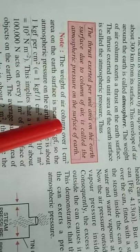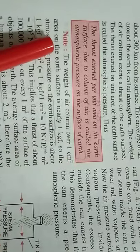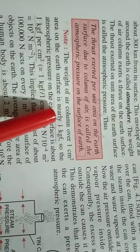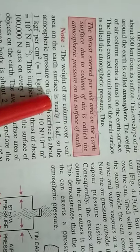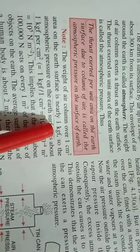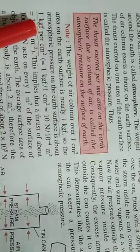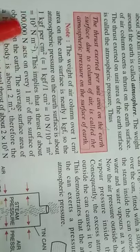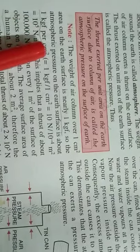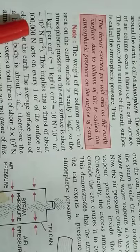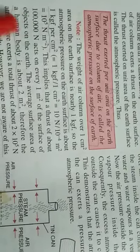So the weight of air column over 1 centimeter square area on the earth's surface is nearly 1 kilogram force. So the atmospheric pressure on the earth's surface is about 1 kilogram force per centimeter square, which is nearly 10 raised to power 5 newton per meter square. That means on 1 meter square, approximately 1 lakh newton force is applied by the air.